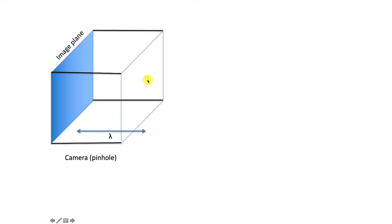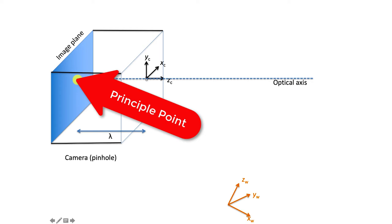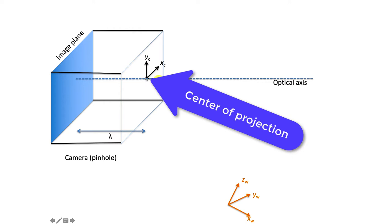Here's the physical setup: your camera has a pinhole — the only way for light to come in. The image plane with your CCD array is a distance lambda, called the focal length, behind this pinhole. To talk about where the camera is, we attach a coordinate frame: Z pointing out along the direction of sight, X to the side, and Y up. There's also a world frame — some arbitrary right-handed frame out in the world. Drawing a line through the pinhole, it intersects the image plane at a point called the principal point. We call the pinhole location the center of projection, since every light ray passes through it.